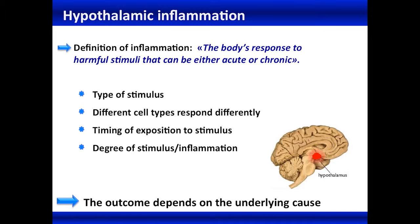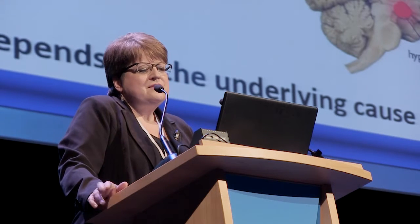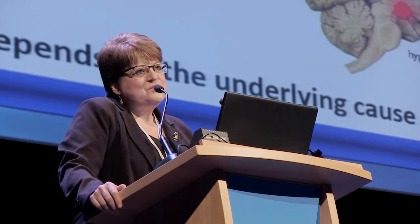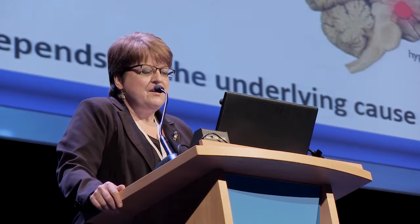The outcome is going to depend on the underlying causes, the type of stimulation, and the degree of stimulation. We've known for a long time that neuronal inflammation is involved in other diseases in other parts of the brain, but it's only recently, in the last few years, that we've started to concentrate on neuronal inflammation in the hypothalamus.